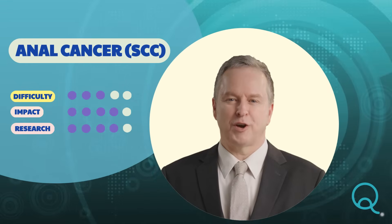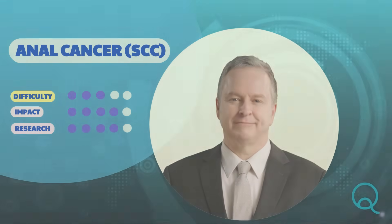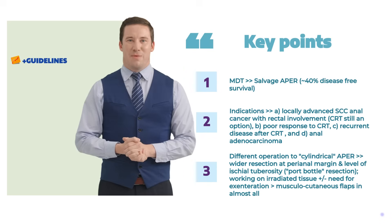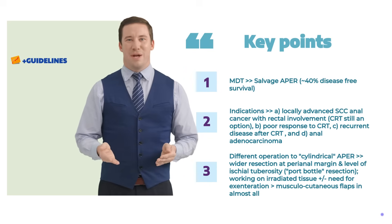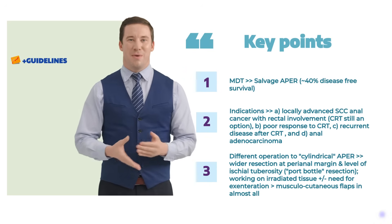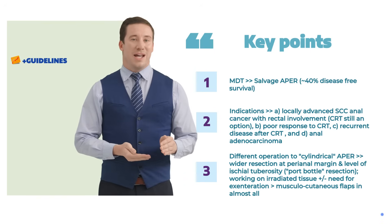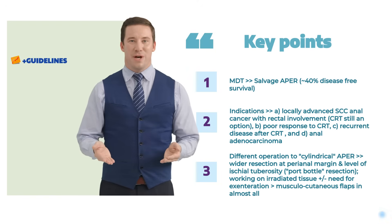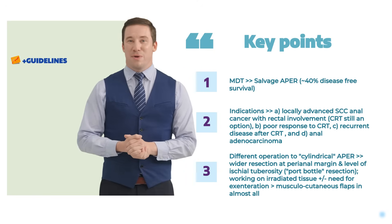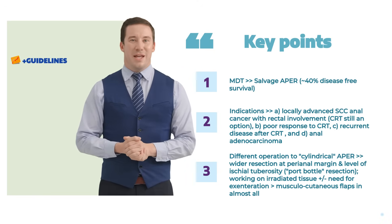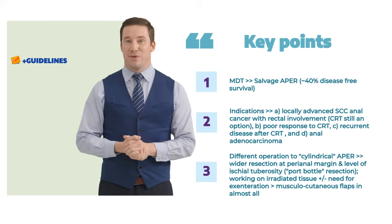Is there a role for abdominal perineal resection of the rectum in the context of anal cancer? Salvage abdominal perineal resection may be indicated when there is a poor response to chemoradiotherapy, recurrent disease after chemoradiotherapy, and true anal adenocarcinoma. Chemoradiotherapy is still an option in advanced anal SCC with rectal involvement or true rectal SCC, though these patients may be ultimately more amenable to radical surgery.